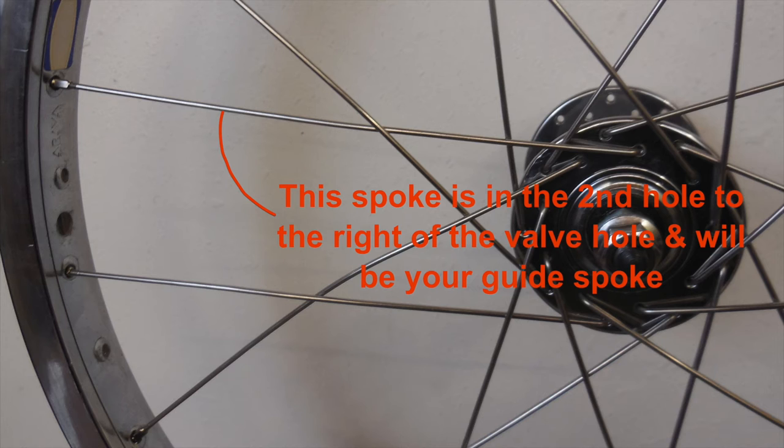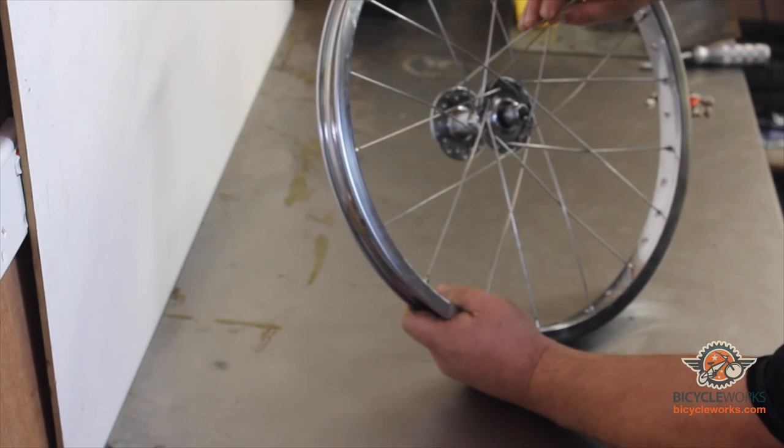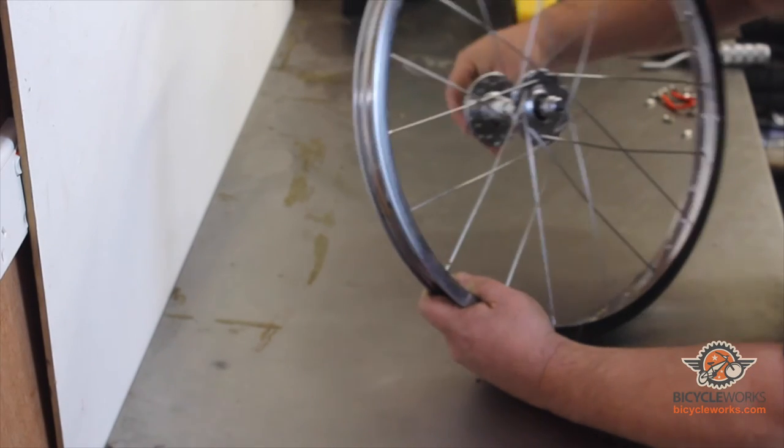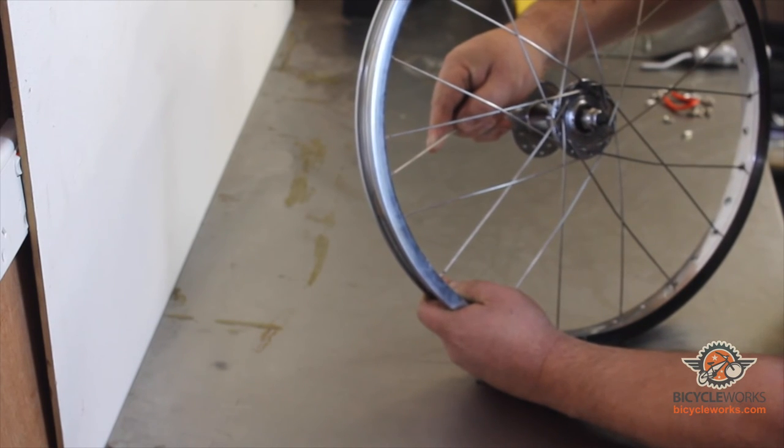Easiest way is to use the second spoke to the right of the valve hole as your guide. Now looking at the hub from the spoke to side, you'll see that that spoke has a hole that is just a touch in front of it on the other flange. Once you've determined the correct hole, put your spoke through from the back, bring it around and put it into the first hole to the right after the valve hole.